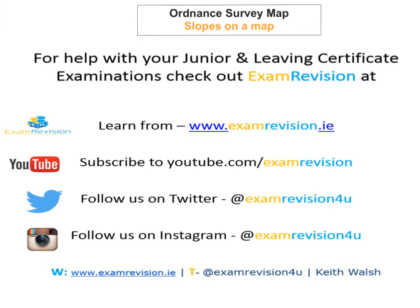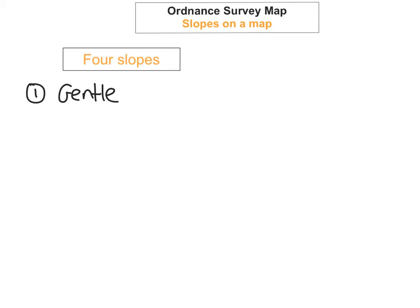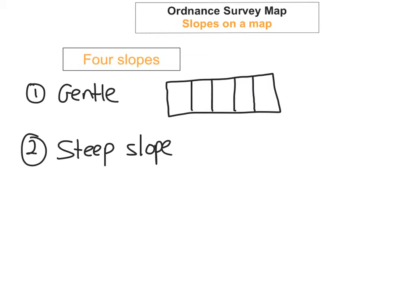The first type is a gentle slope. This is usually when you find on a map that the contour lines are evenly spaced apart — something like this — and that shows that the slope is very gentle.